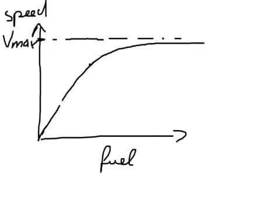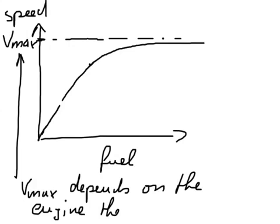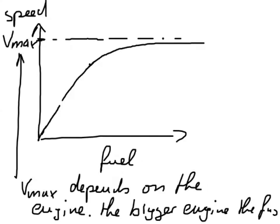Of course my maximum speed really depends on what kind of engine I have. So Vmax depends on the engine and on the size of the combustion chamber. The bigger the engine, the faster the car goes, so the faster we are going.